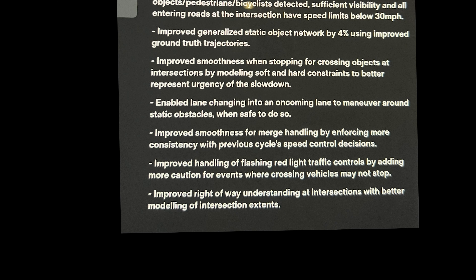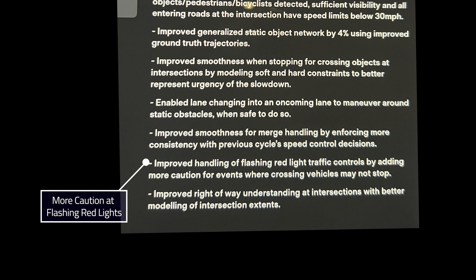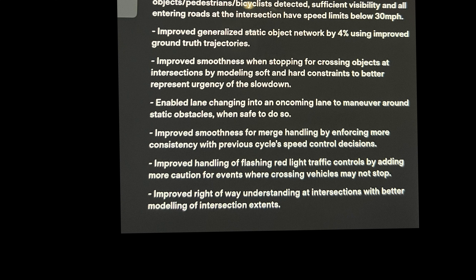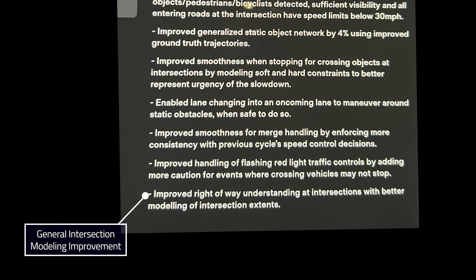Bullet number seven: improved handling of flashing red light traffic controls by adding more caution for events where crossing vehicles may not stop. I think the car was probably assuming that a flashing red light meant a four-way stop. What this is accounting for is that sometimes a flashing red light for you is just a flashing yellow light for the other lane, so it's adding more caution there — which is smart. Number eight: improved right-of-way understanding at intersections with better modeling of intersection extents. In 10.9 we saw the introduction of intersection modeling as a 3D vector versus bag of points — my guess is this is just an improvement on that.